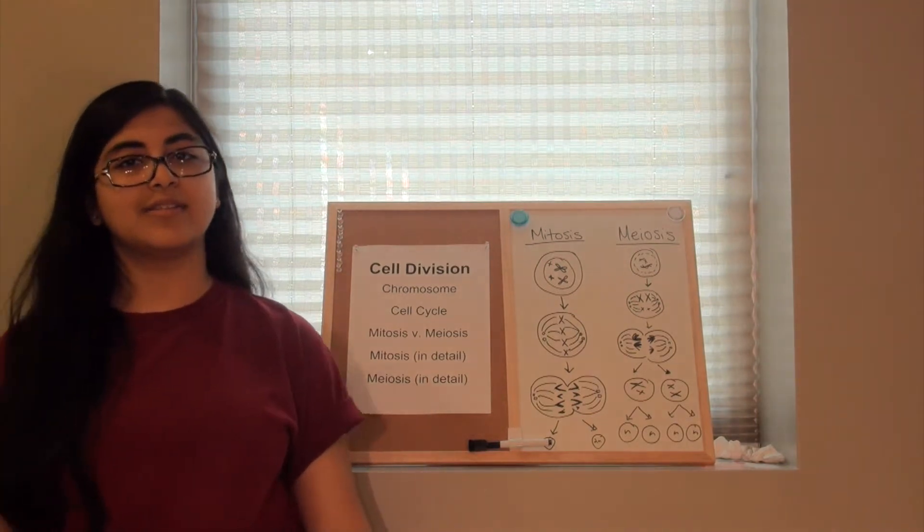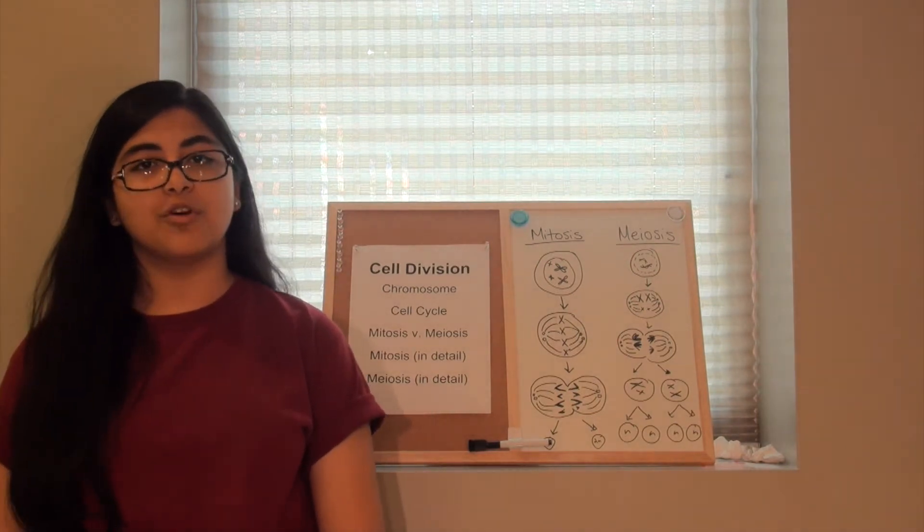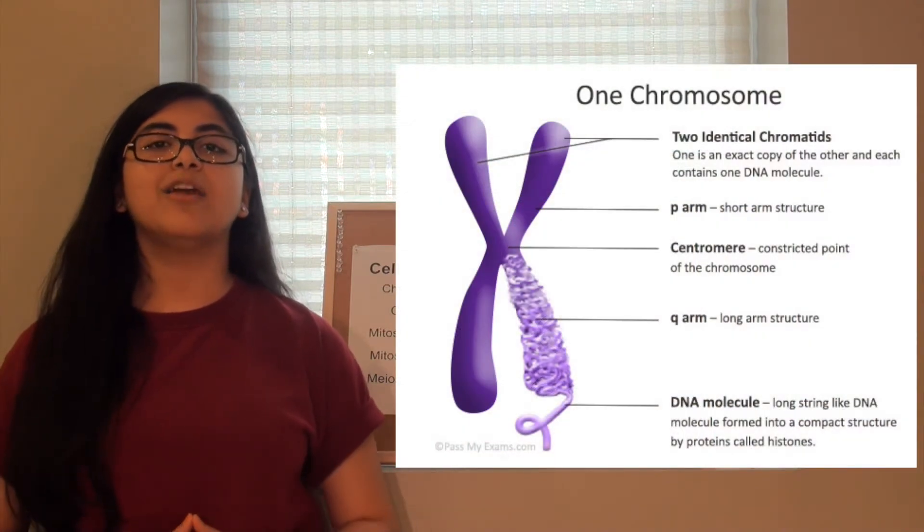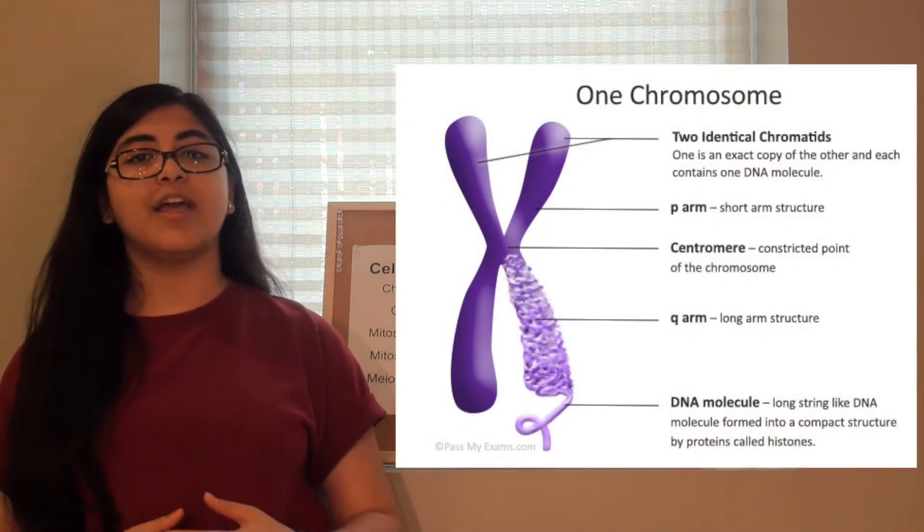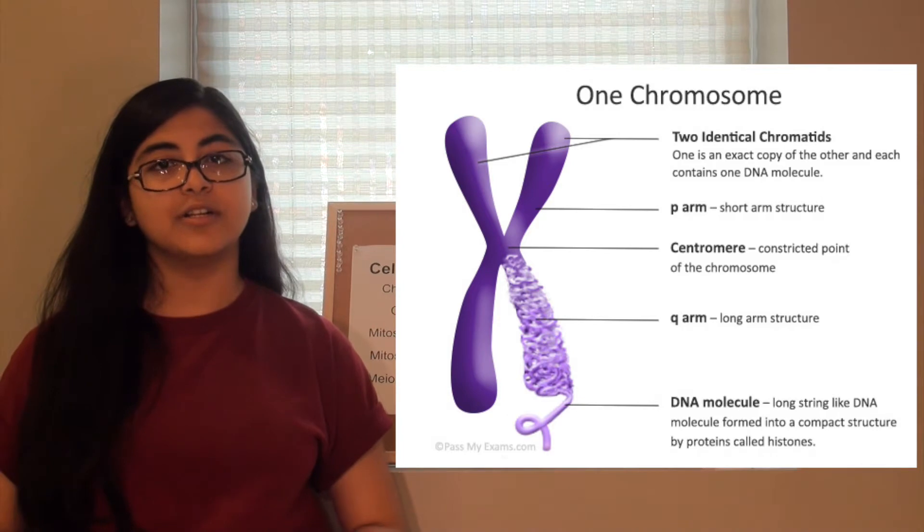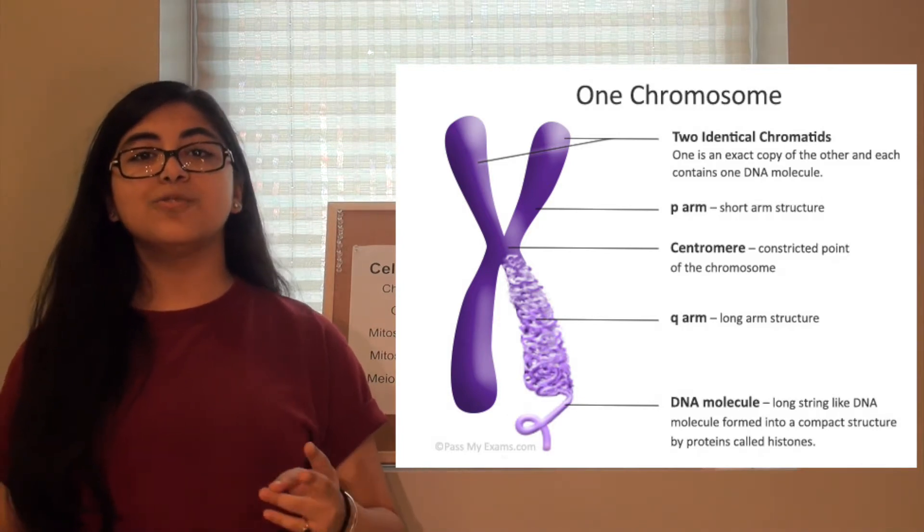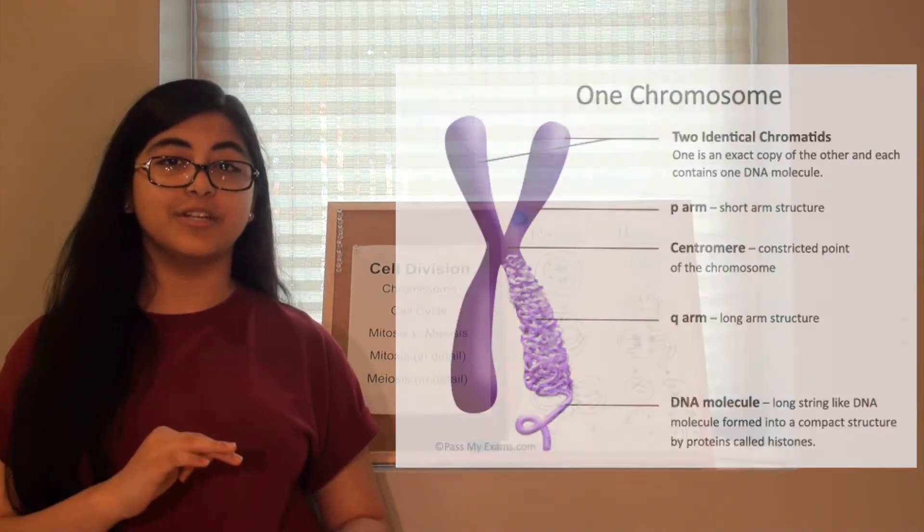But before we go into the process itself, let's talk about a chromosome. A chromosome is a highly coiled and condensed strand of DNA that contains your genetic material. A chromosome has two sister chromatids that are held together by a centromere.